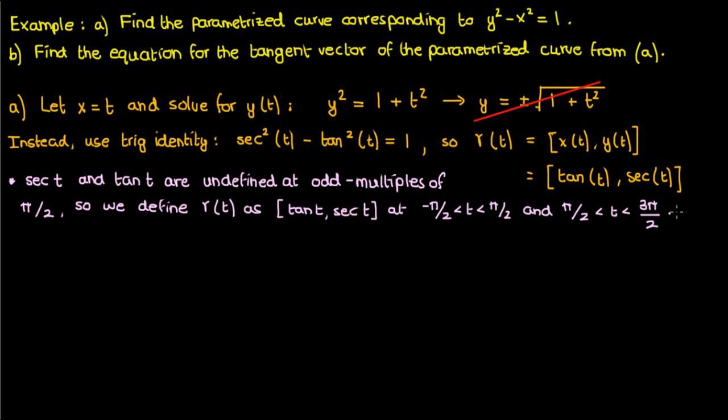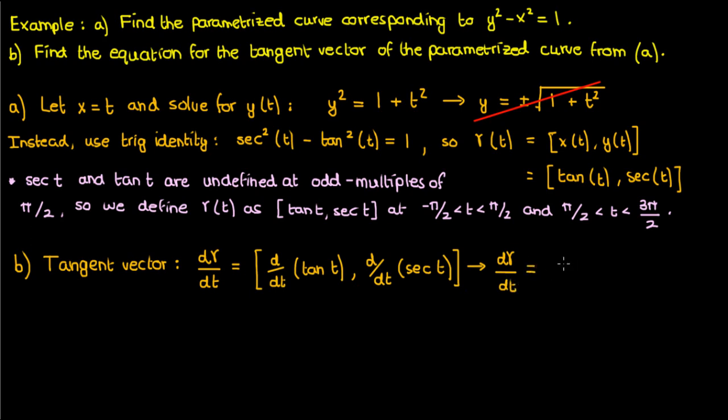And that should do it for part a but what about part b? Well to find the tangent vector all we have to do is find d gamma by dt and that just involves differentiating the components of gamma separately. I'll assume you guys know how to differentiate trigonometric ratios so I'll just straight up give you the answer which is secant squared of t comma secant t times tangent t.